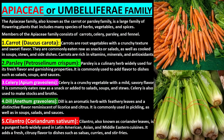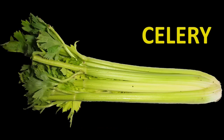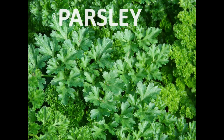The Apiaceae family, also known as the carrot or parsley family, is a large family of flowering plants that includes many species of herbs, vegetables, and spices. Some notable members of the Apiaceae family consist of carrots, celery, and parsley.